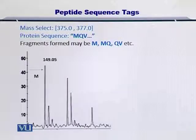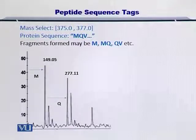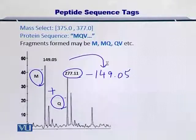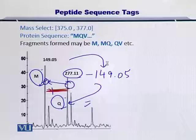Looking at the different peaks in this MS2 spectrum: the first peak has a mass of 149.05. Since you know the molecular weight of all amino acids, you can compare 149.05 with all amino acids and determine that it is methionine, M. Next, if you have another peak at 277, you can say it results from the sum of Q and M. By subtracting the first peak from the second, you arrive at the molecular weight of Q. By subtracting the previous peak from the next peak, if the difference equals a known amino acid's molecular weight, you can confidently identify that amino acid.